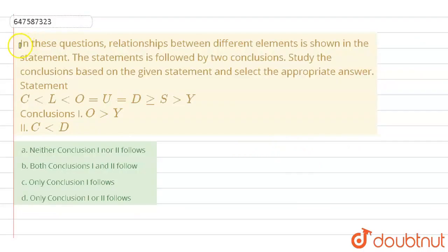So the question given here is: in these questions, relationship between different elements is shown in the statement. The statement is followed by two conclusions. Study the conclusions based on the given statement and select the appropriate answer.